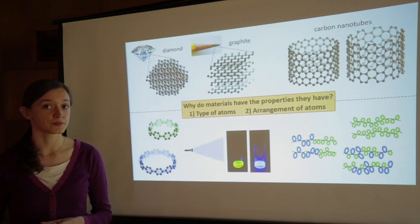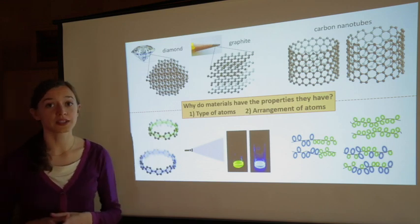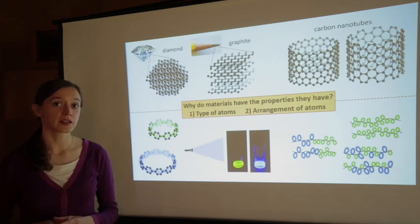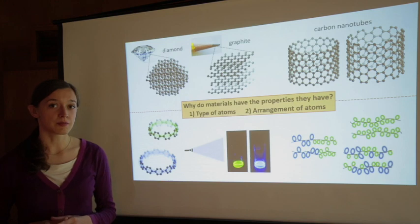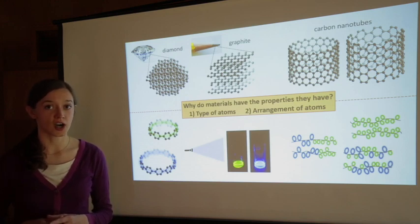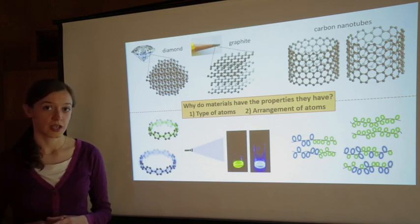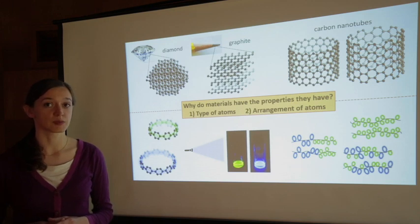Let's take carbon for example. Diamond and graphite, or pencil lead, are two types of carbon materials. They're both made entirely of carbon atoms, but the arrangement of atoms is different. In diamond, each carbon atom is connected to four other carbon atoms in a 3D structure, and that 3D structure makes diamonds extremely hard.